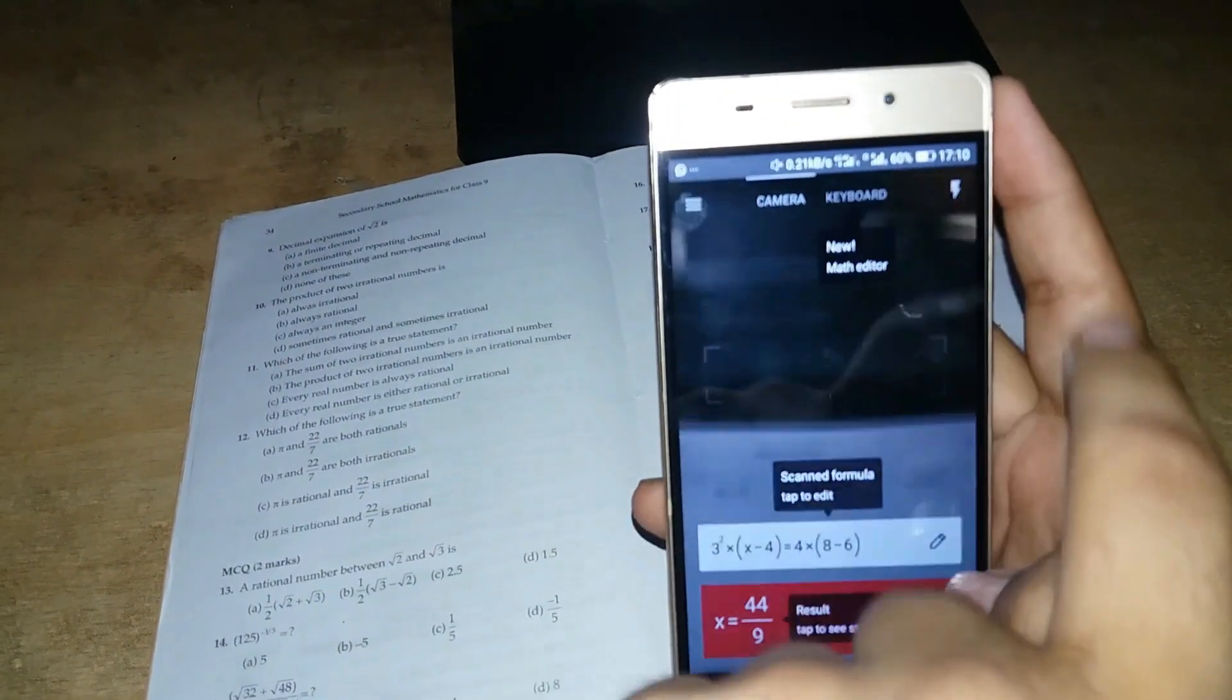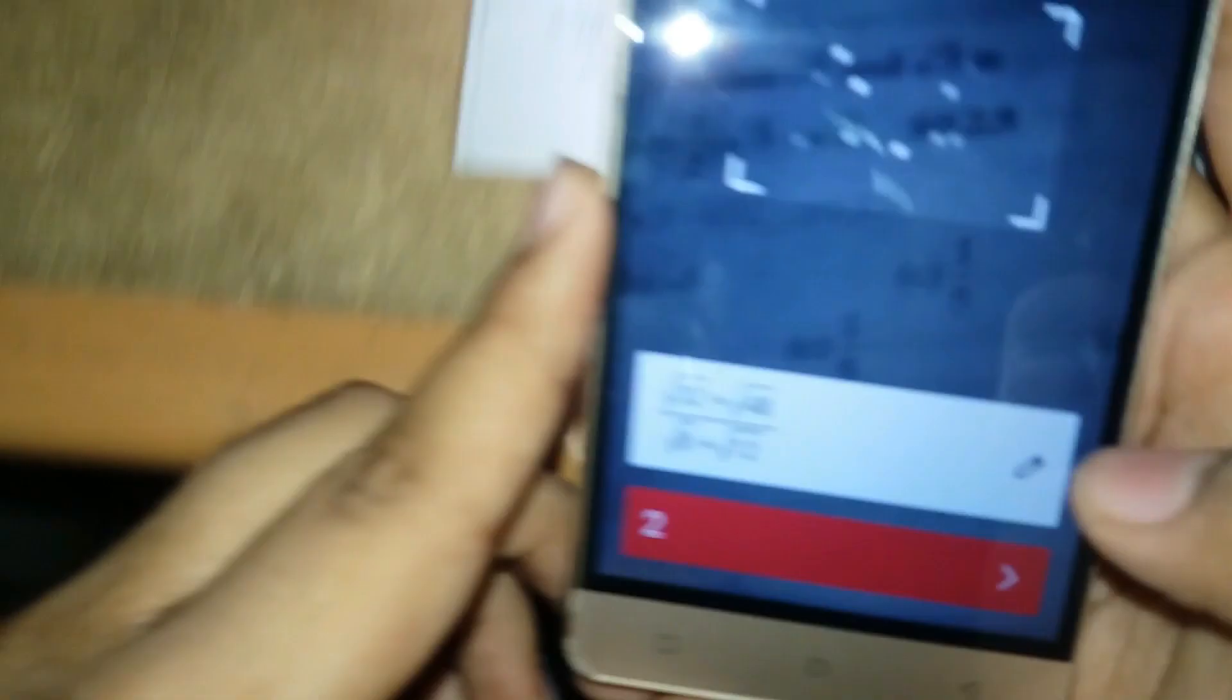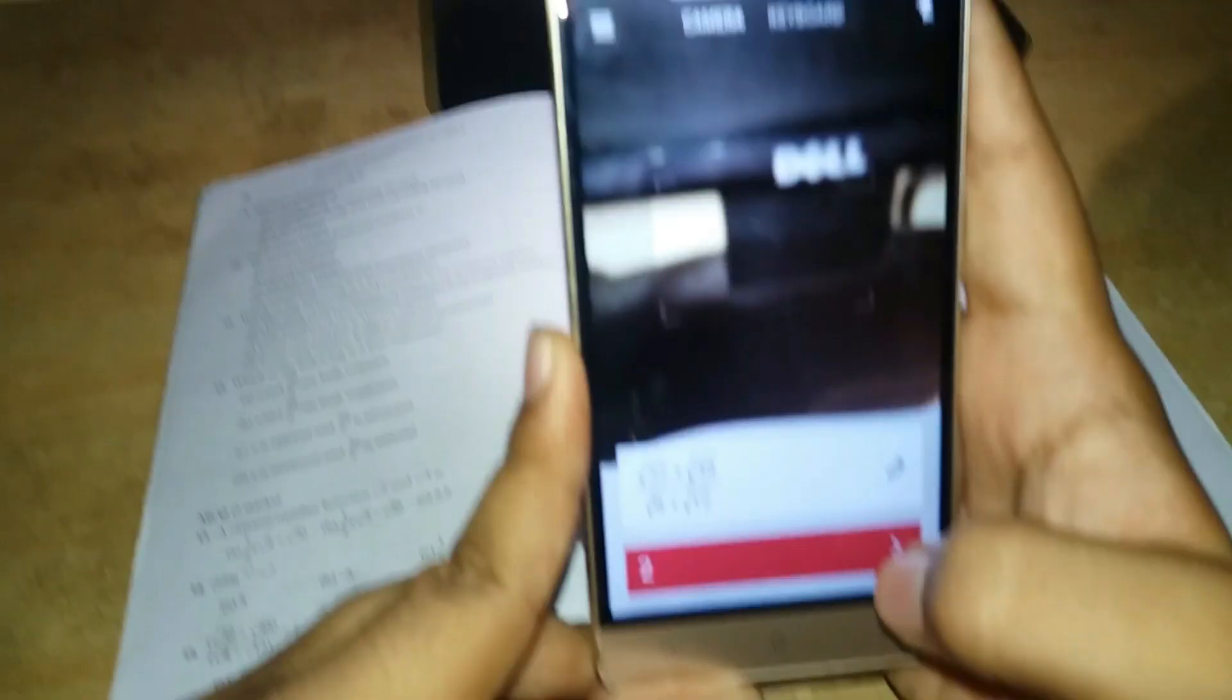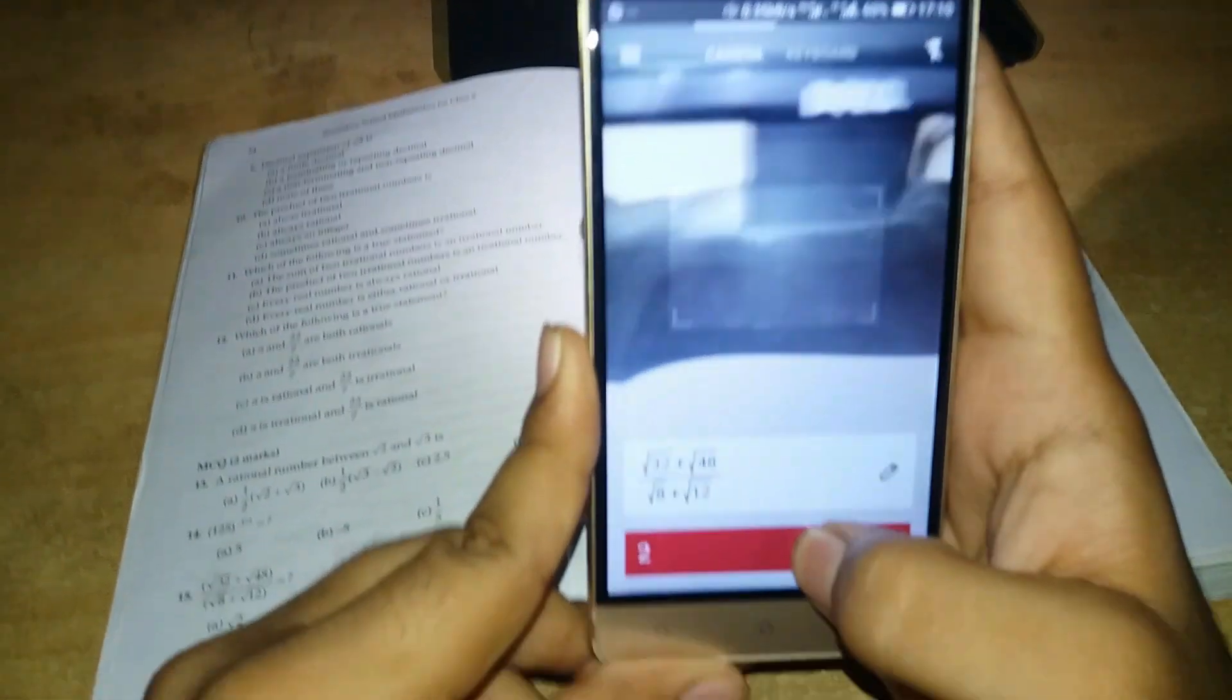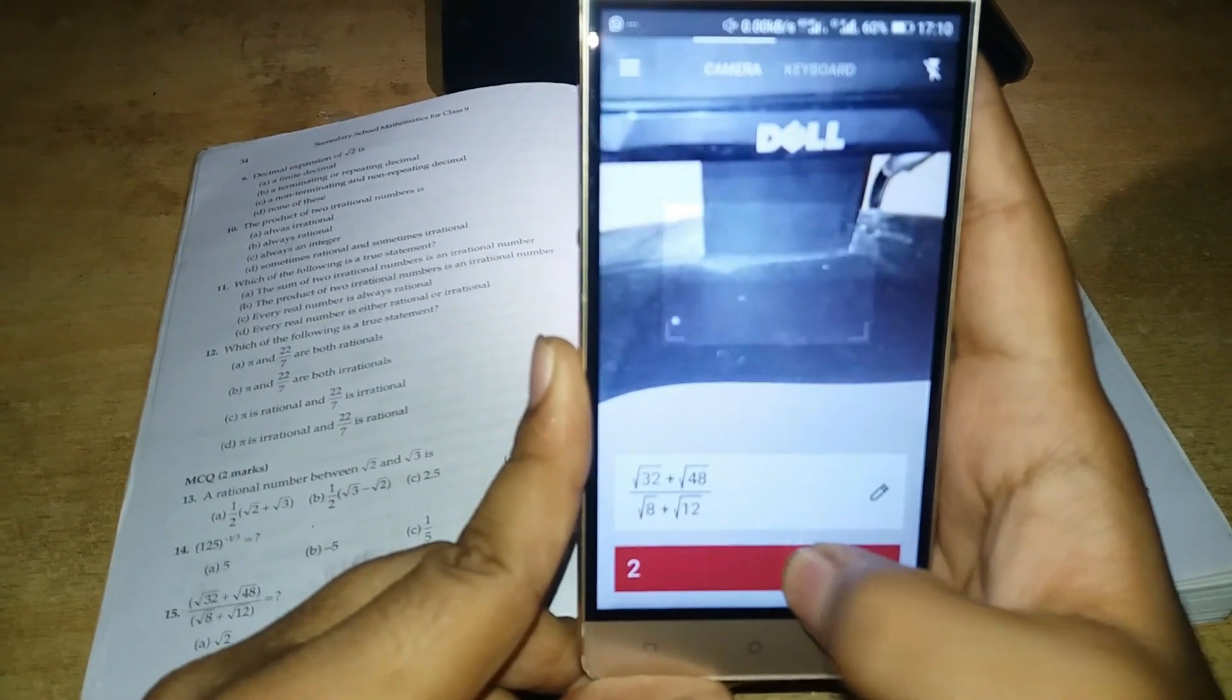We will first turn on the flash and just go to the equation and here is the equation. Just equation has been scanned and we have got instant result. Let's click on the result to get steps.